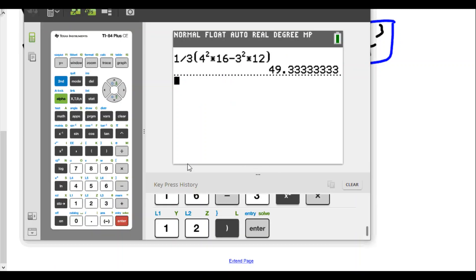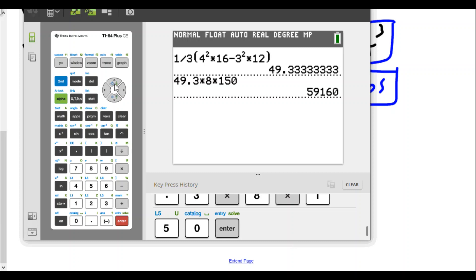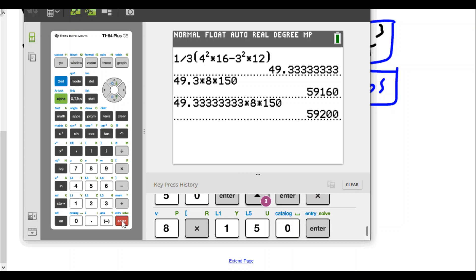With our rounded value, we'll do 49.3 times 8 times 150 and that weight will be a total of 59,160 pounds. Now one might ask what happens if we use the actual answer from before, will that change things? Let's take a look. If we use 49.3 repeating and multiply by 8 and by 150, we see the weight is off by 40 pounds because we get 59,200.